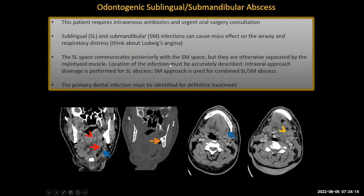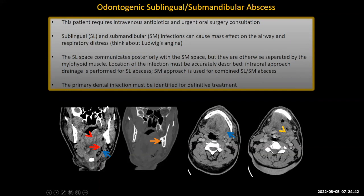The sublingual space communicates posteriorly with the submandibular space, and the location should be accurately described and communicated. If it was just confined to the sublingual space, an intraoral approach for surgical drainage would be preferred. However, if the submandibular space is also involved, then an external submandibular approach would also be utilized to get to the abscess. Again, the primary dental infection must be identified for definitive treatment.